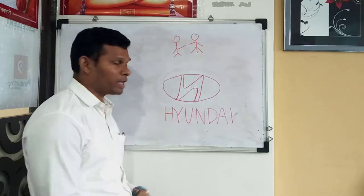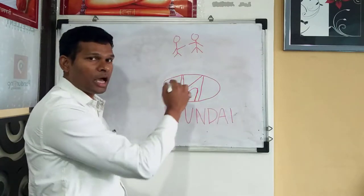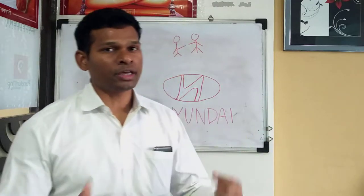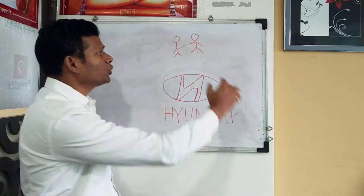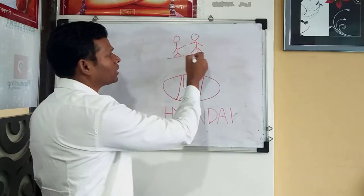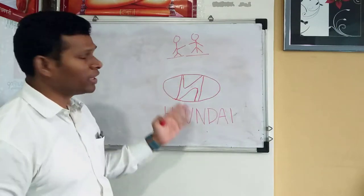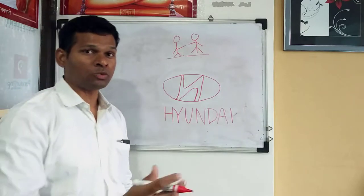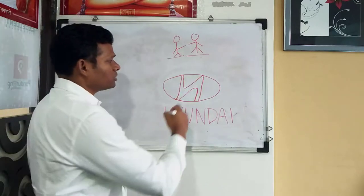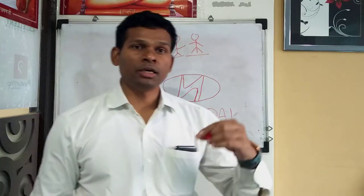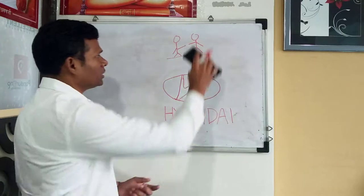Now there is an explanation for this H shape. The kind of H they have — the explanation is there are two entities: one is the Hyundai company and another one is the customer, and they are having a friendly approach to the customer. That's why this particular formation is a handshaking between the customer and the Hyundai company.